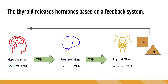The increase in levels of the thyroid hormones is then detected by the hypothalamus, and it will stop production of TRH, thus halting TSH production, which will stop the T3 and T4 production. The body will use the T3 and T4 that has been produced, causing the blood levels to dip again, and the cycle will start over.